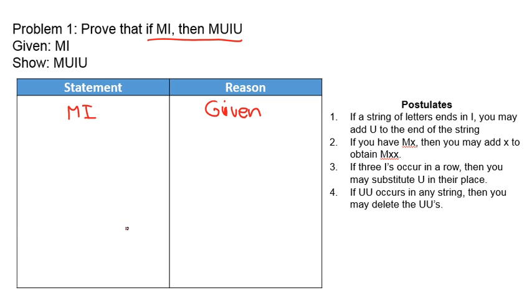Now we know that MI is true. Which postulates can we apply? Postulate one says if the string ends in I, you may add a U to the end — so we could say MIU. Postulate two says if you have M something, you may double what comes after the M — so if we have MI, we could say MII. Postulates three and four do not apply. I'm going to apply postulate two, so since MI is true, I can say MII is true by postulate two.